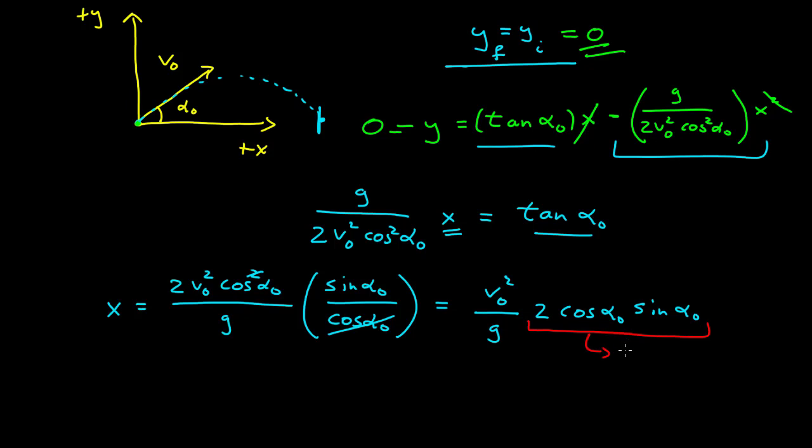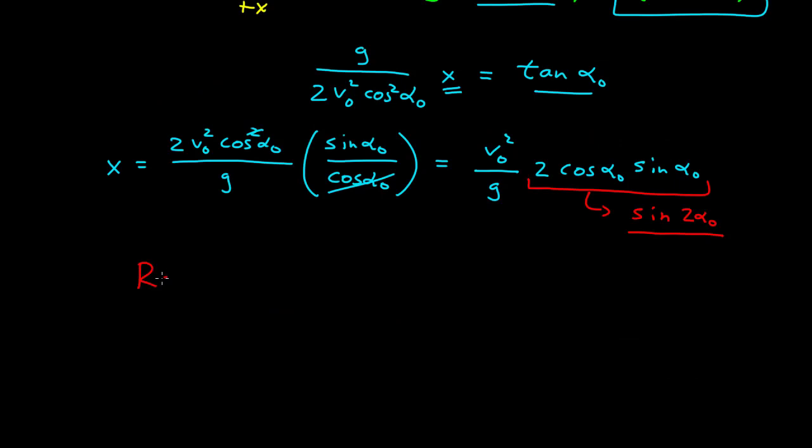is equal to sine of 2 alpha naught. Our range, which is sometimes just called R, is v naught squared over g times sine of 2 alpha naught.